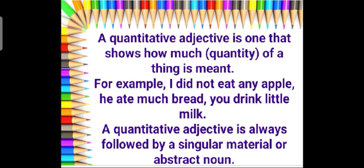A quantitative adjective is one that shows how much. Basically, it tells us about the quantity of a thing. For example: I did not eat any apple. He ate much bread. You drink little milk. Here, the words any, much, little tell us about the quantity of consumption of apple, bread, and milk. A quantitative adjective is always followed by a singular material or an abstract noun.